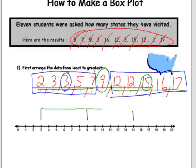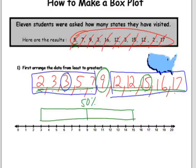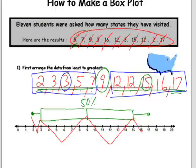I'm going to go ahead and make my box. Remember, the box represents 50% of the data, so there's 50% of the kids represented right there. The lowest piece of data, or the minimum, was 2, so I'm going to make a dot and draw my whisker. The maximum value was 17. So there's your box and whisker plot. 25% of the students have been to this many states, 25% to this many, 25% to this many, and 25% have visited between 15 and 17 states.